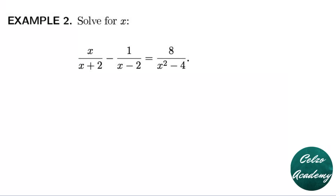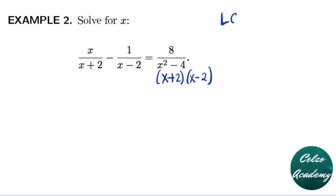Question number two: solve for x in the equation x/(x+2) minus 1/(x-2) equals 8/(x²-4). Notice that the denominator on the right side, x²-4, is a difference of perfect squares. We can factor it as (x+2)(x-2). So the LCD for this equation is (x+2)(x-2).